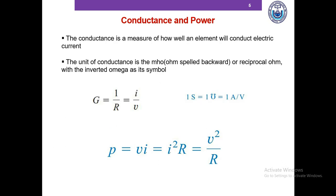Now we're going to talk about conductance and power. Conductance is basically the opposite of resistance — it is a measure of how well an element will conduct electric current. The unit of conductance is mho, which is ohm spelled backward, or siemens. One siemens equals one mho equals one ampere per volt. Conductance G is equal to one divided by resistance. Applying Ohm's Law, this becomes I by V. For power, P equals voltage times current. Using Ohm's Law and replacing V in the equation P = VI, we obtain P equals I squared R.